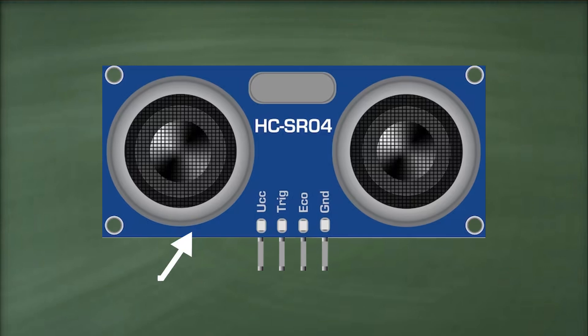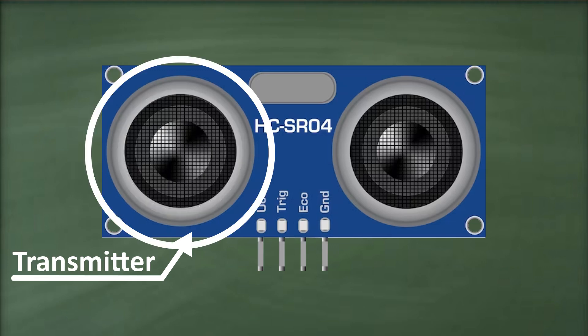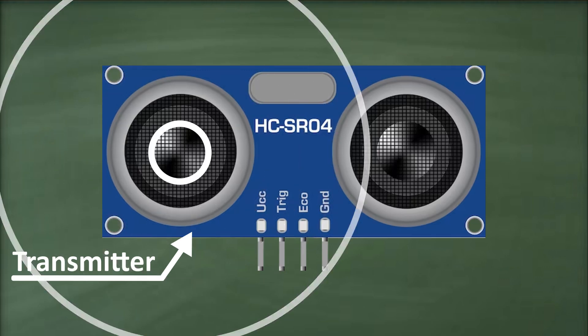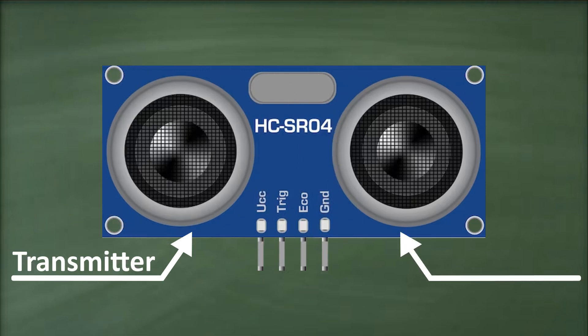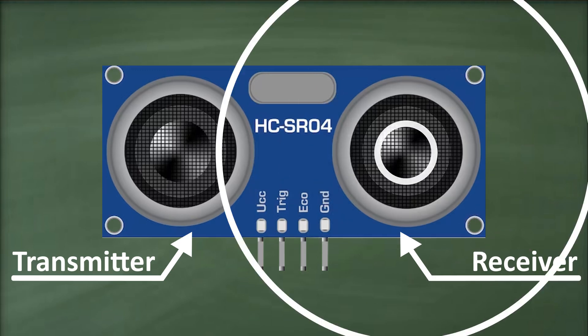One transducer acts as a transmitter, converting the electrical signal into 40 kilohertz ultrasonic sound pulses. The other transducer acts as a receiver, listening for the echo of these transmitted pulses.